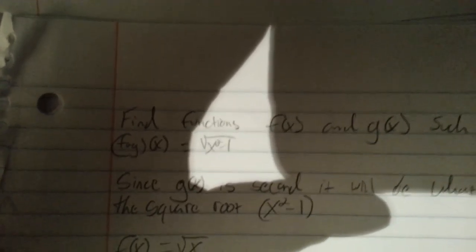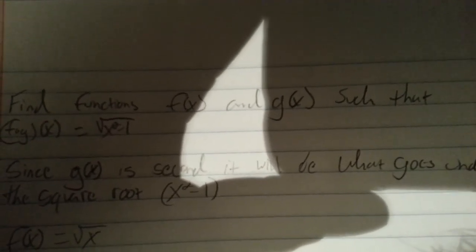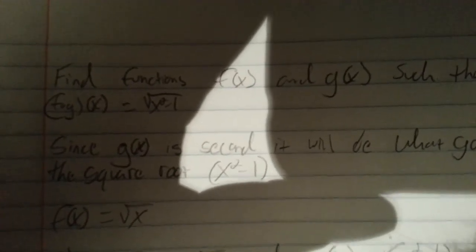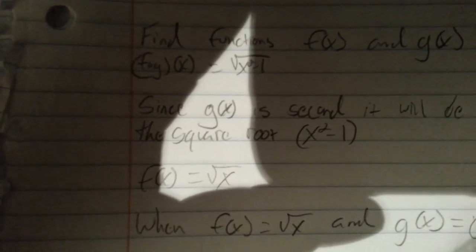Since g of x is the second letter in the composite function, it will be what goes underneath the square root sign. So it's going to be x squared minus 1, leaving f of x to be the square root of x.